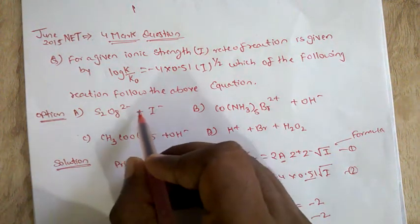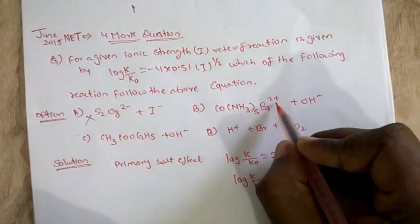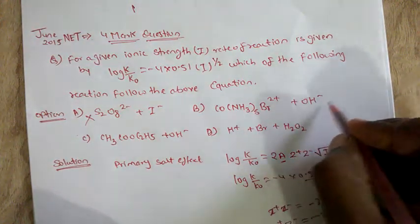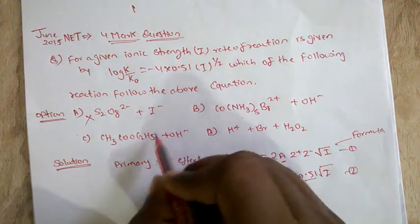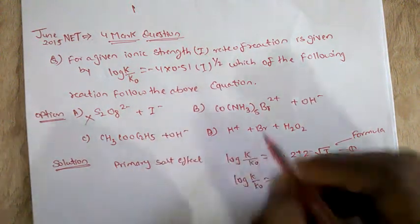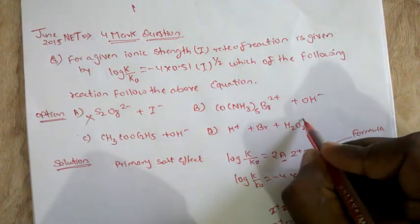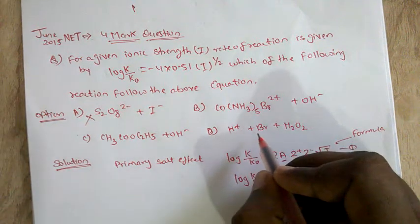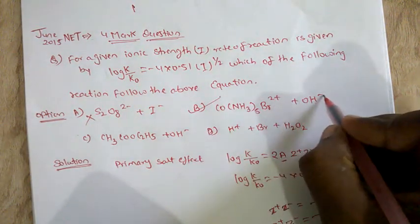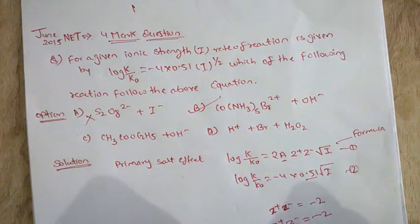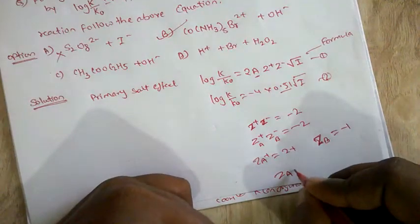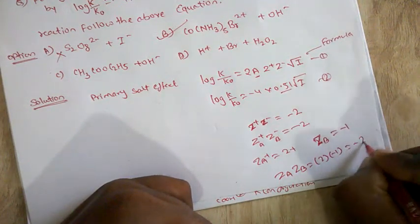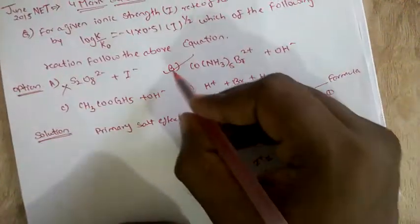Evaluating the options: one option gives minus 1 times minus 2, which is plus 2 — not correct. Another gives 2 times minus 1, which is minus 2 — yes, this works. Another option has a neutral species giving 0 times minus 1, which is 0. The last option also has neutral species giving 0. So only the species with z_A equal to plus 2 and z_B equal to minus 1 gives z_A times z_B equal to minus 2. The answer is option B.